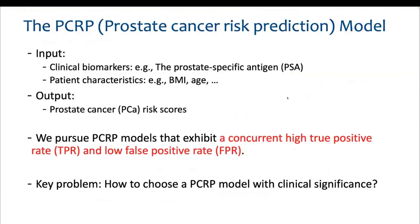This work focuses on the prostate cancer risk prediction task. The PCRP models integrate clinical biomarkers and patient characteristics to calculate a PCR risk score for patients. In clinical practice, we pursue PCRP models that have concurrent high TPR and low FPR. Therefore, a key problem is how to choose a PCRP model with clinical significance.